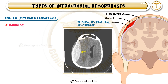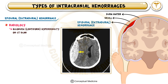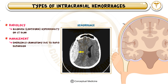On a CT scan, epidural hematomas appear as a biconvex, lentiform hyperdensity. An important point to remember is that it does not cross suture lines because the dura is tightly attached to the skull. Management of epidural hemorrhage usually requires emergency craniotomy to relieve pressure and prevent further brain damage.